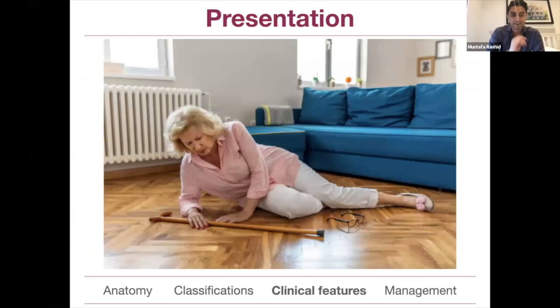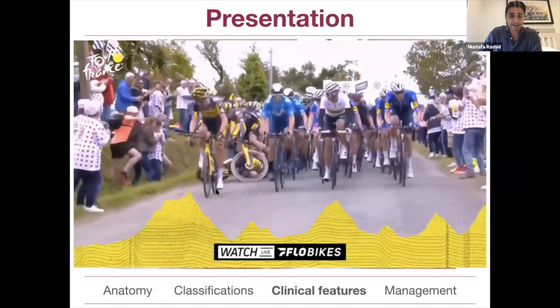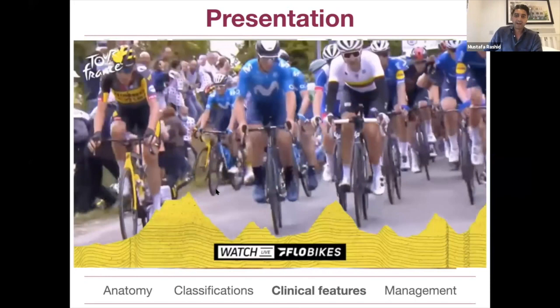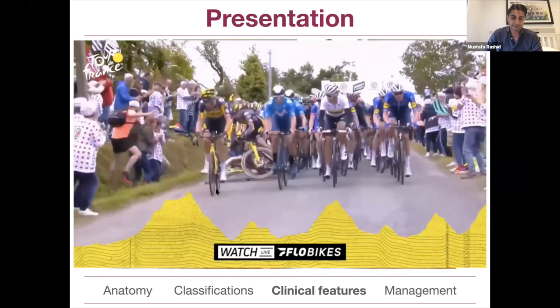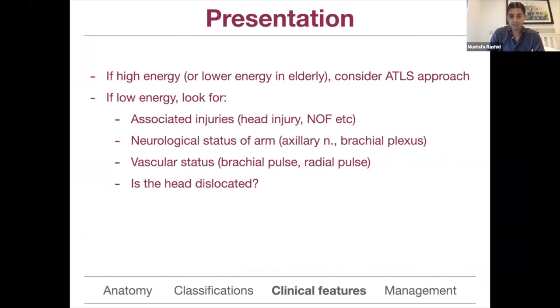When a proximal humerus fracture patient presents to A&E, you could see Doris who fell at home from standing height, or a high-energy cyclist who decks it on the tarmac at speed. Those two mechanisms and fracture patterns can be very different. For high-energy mechanisms, consider an ATLS approach - don't hesitate to put out a trauma call. In elderly patients with seemingly low-energy falls, always look for associated injuries including femoral fracture, pelvic fracture, and head injury.